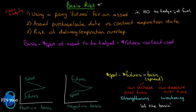The second source of basis risk: the asset purchase or sale date is not the same as the contract expiration date. Remember, convergence happens on the last day of trading — the spot and futures price converge. But if you have to close your futures contract before the expiration date, they won't converge, leaving a gap between the two prices. That's called basis risk.